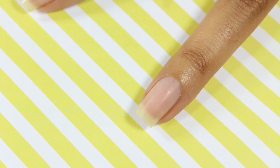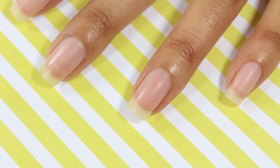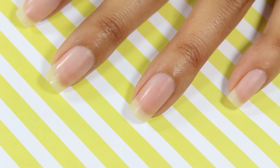Then I use the white side of the four-way buffer in order to further smooth out the surface of the nail. Lastly, I use the gray side to get super shiny nails. I just love how smooth and shiny the buffer leaves my nails.